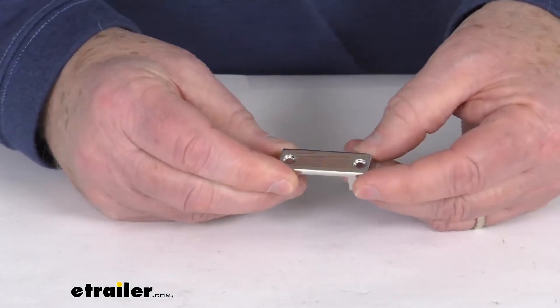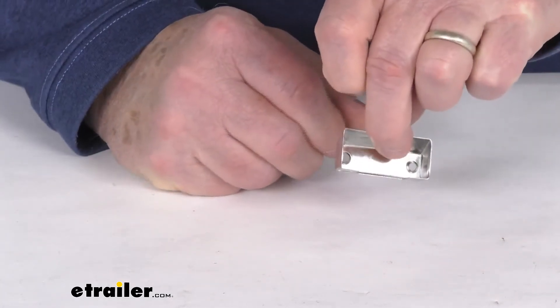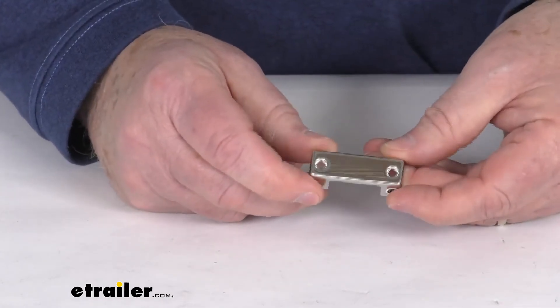But that should do it for the review on this stainless steel horizontal mounting cover for the Technique Mini LED Accent Lights.